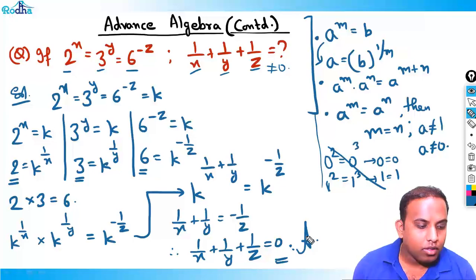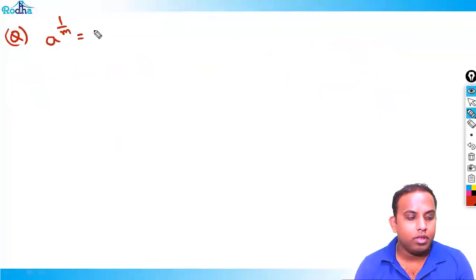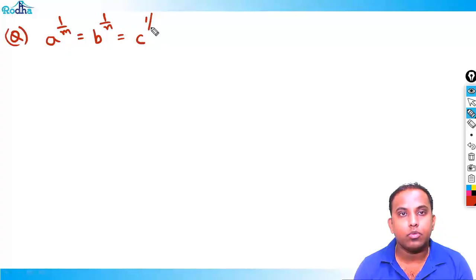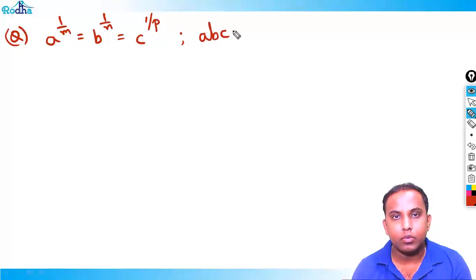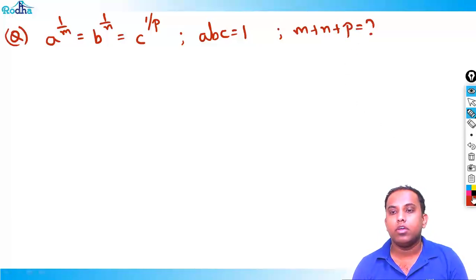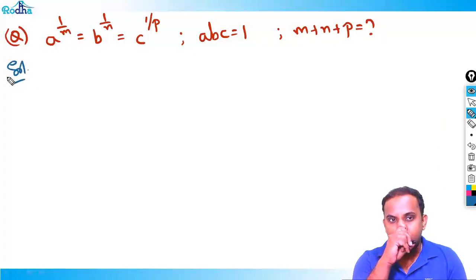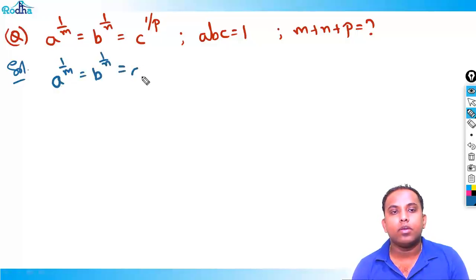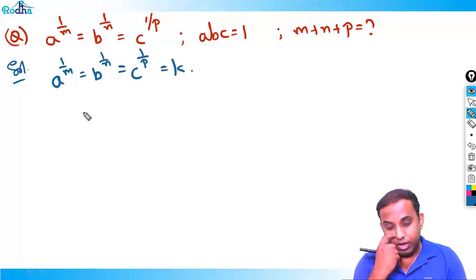The next question: a^(1/m) = b^(1/n) = c^(1/p), and given that abc = 1, find the value of m + n + p. We apply the same approach — equate all three expressions to k.